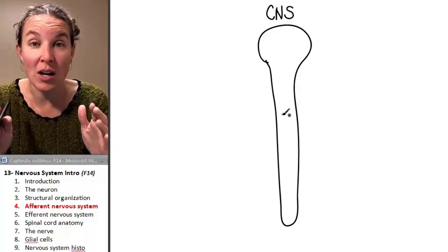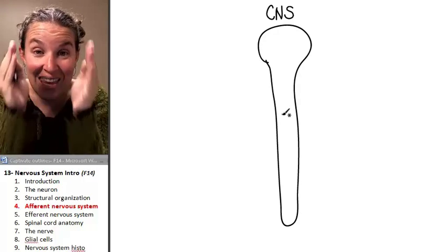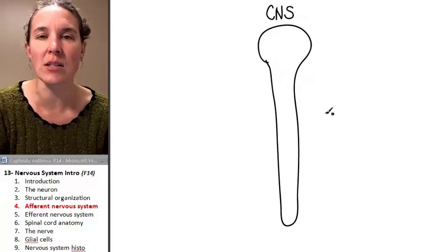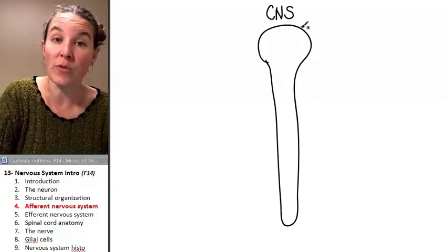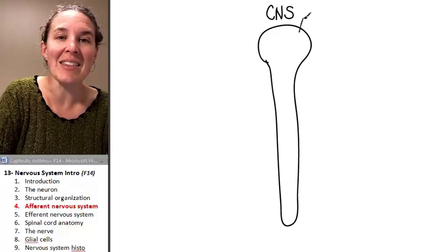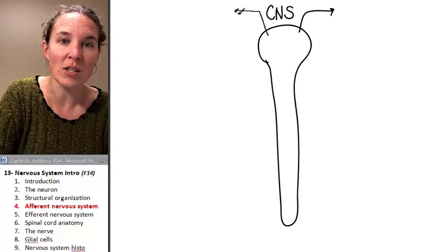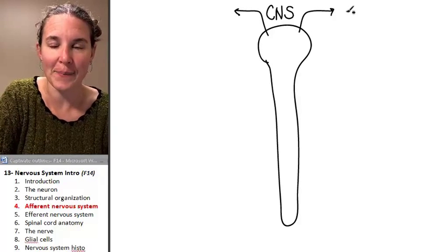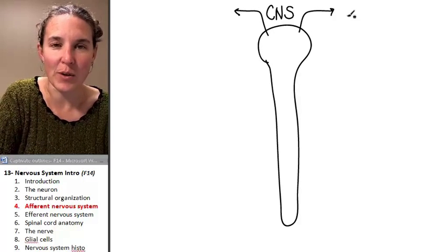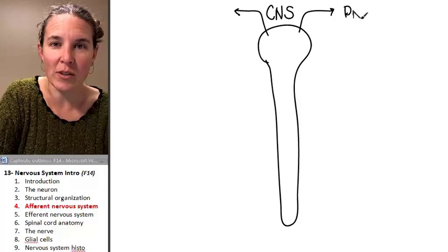Only neurons that travel within this structure are included in the central nervous system. The peripheral nervous system was anything that went out. This is the peripheral nervous system.